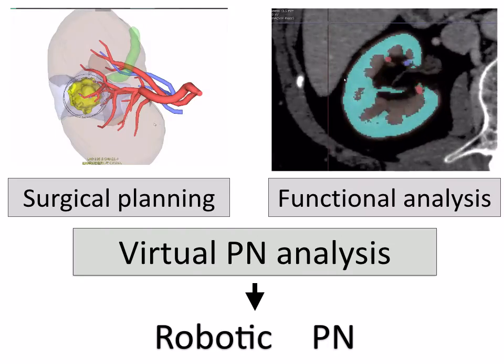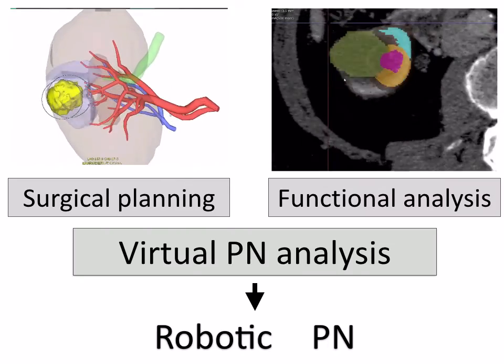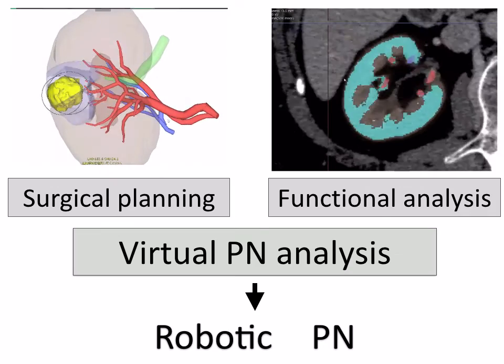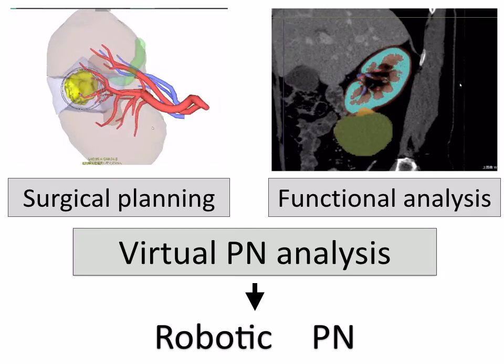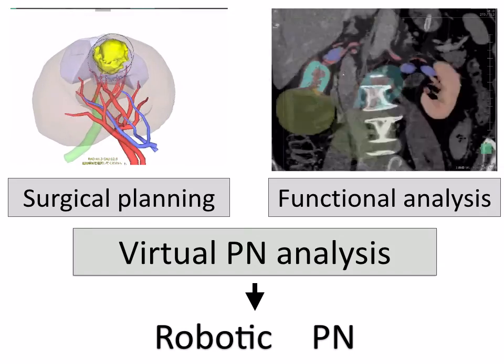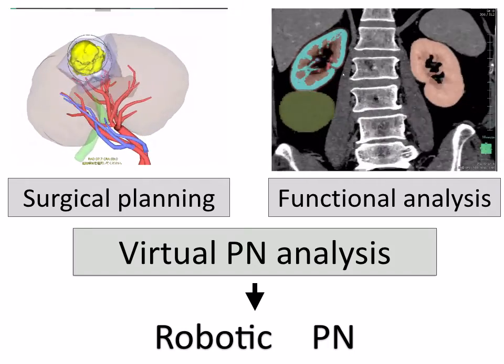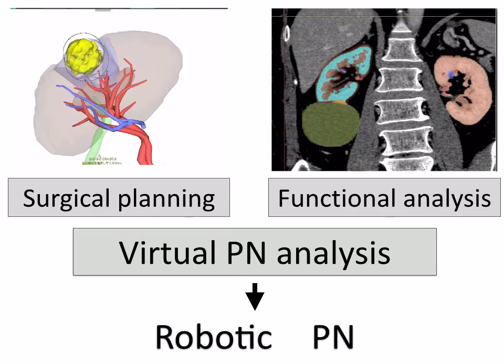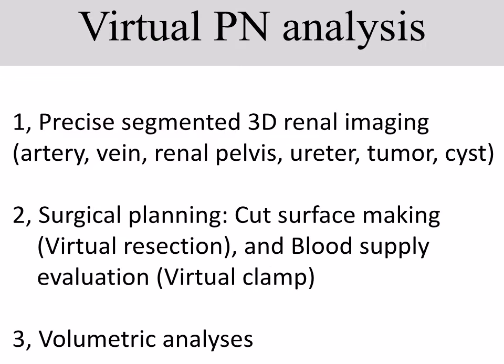This is the concept of our imaging analysis. Both surgical planning and functional analysis will be done before the real operation. With this analysis, we are able to get clear objectives and operative procedures before the operation, and share that information among the operation staff. This analysis was performed in the following three steps. First, we made a precise segmented 3D renal image, which contains artery, vein, renal pelvis, ureter, tumor, and cyst images from CT data.